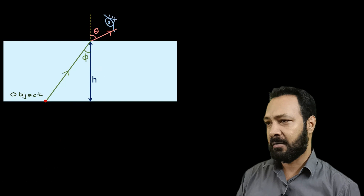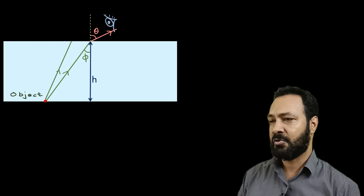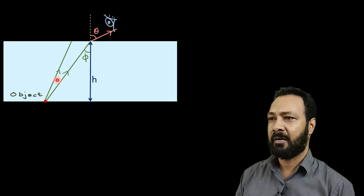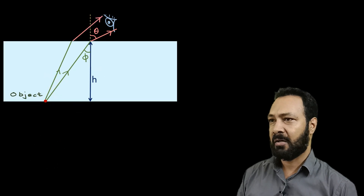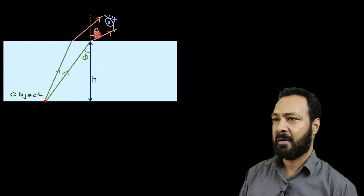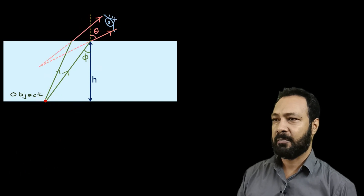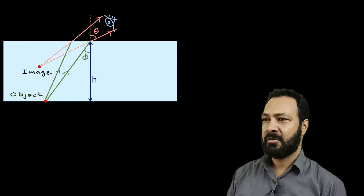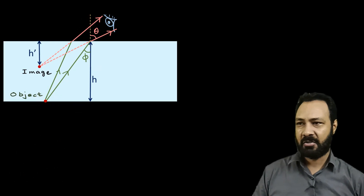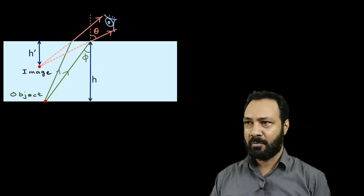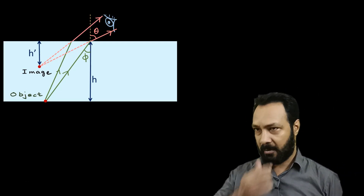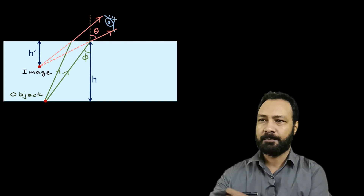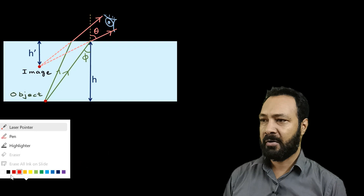Looking at the diagram, the two lines are very close to each other. One ray from the object refracts at the surface and the two refracted rays' intersection gives the image. From the geometry with h, theta, and the refractive index of water, the question is asking us to determine the apparent depth. Let's set up the geometry: we have the surface, the object O at depth h, the incident ray, and the refracted ray.